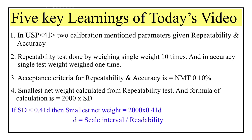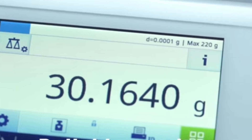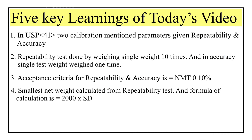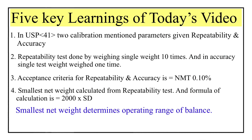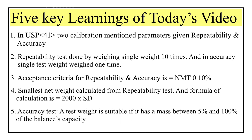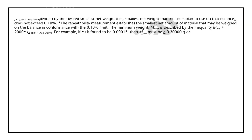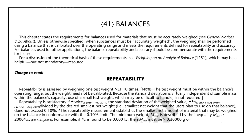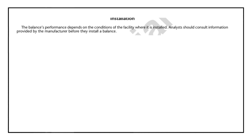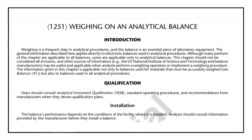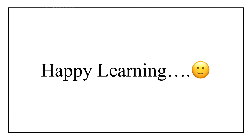Next time whenever you do weighing in the lab, check your balance screen carefully — you will find a d value displayed on the balance screen. Smallest net weight helps us in determining the operating range of a balance. Point five: to carry out the accuracy test, the test weight should be between 5 to 100 percent of the balance capacity. That was all about today's video — hope you learned something new. In the next video we will decode USP Journal Chapter number 1251. Till then, stay tuned to Pharma Pill. Bye-bye and happy learning.